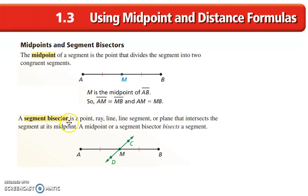A segment bisector could be a point, a ray, or a line or a line segment that intersects that segment at the midpoint. So this line right here bisects the segment AB, that means it goes through the midpoint. In this case, line CD is a segment bisector of segment AB, which again means AM is congruent to MB.